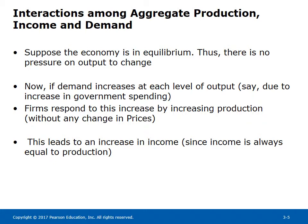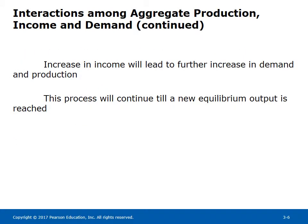Suppose the economy is in equilibrium, thus there is no pressure on output to change. Now if demand increases at each level of output, say due to an increase in government spending, firms respond by increasing production without any change in prices. This leads to an increase in income, since income is always equal to production. The increase in income will lead to further increase in demand and production, and this process will continue until a new equilibrium output is reached.